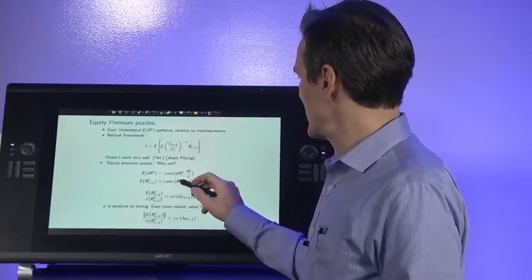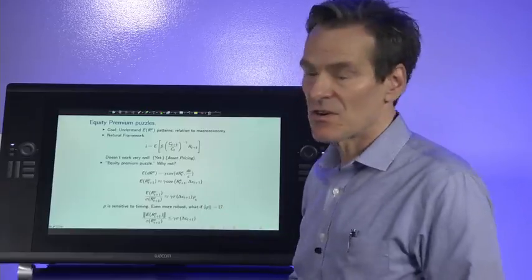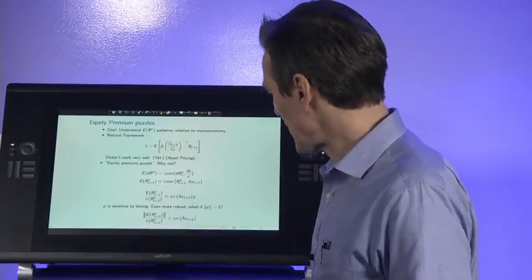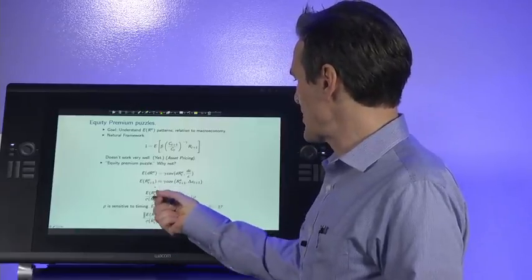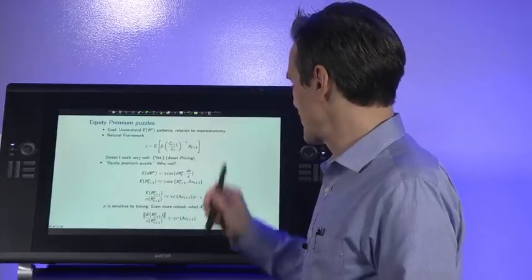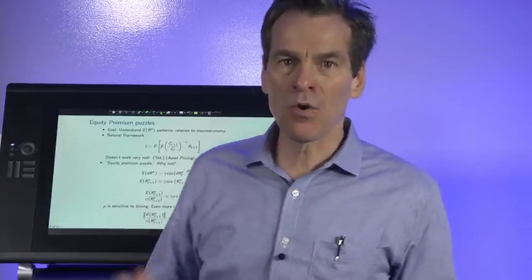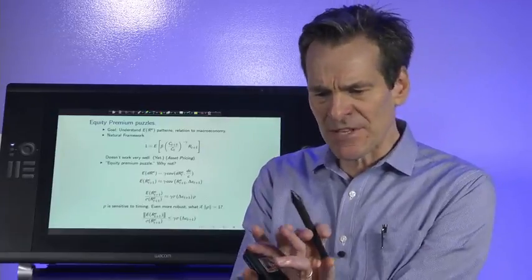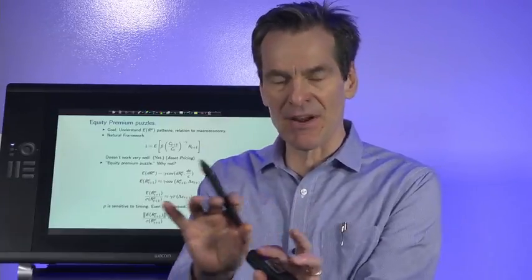Divide both sides. Express the covariance as the product of standard deviation and correlation coefficient. Divide both sides by standard deviation. And we get that the market Sharpe ratio should be related to risk aversion, variance of consumption growth, and the correlation. Now let's get even more robust. That correlation is sensitive to timing.